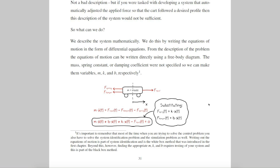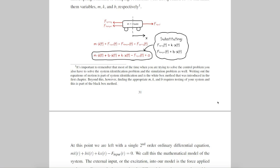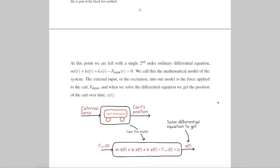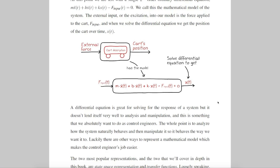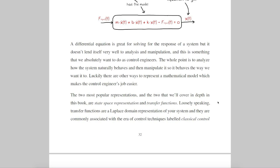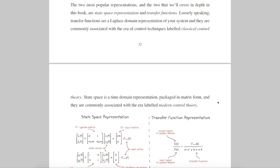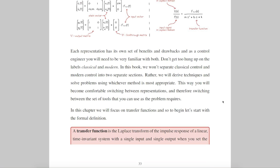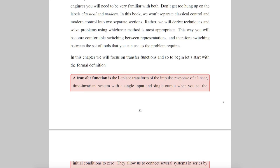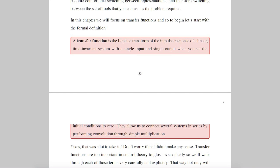So we develop mathematical models in the form of differential equations. And once you have your differential equations, you get to make another choice: do you keep your model as differential equations, or do you manipulate them into another representation? The two most popular are transfer functions and state-space representation. Obviously this chapter is going to talk about transfer functions. The formal definition is: a transfer function is the Laplace transform of the impulse response of a linear time-invariant system with a single input and single output when you set the initial conditions to zero.